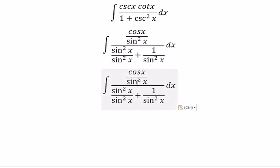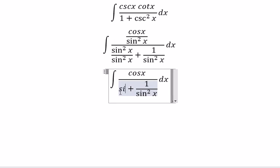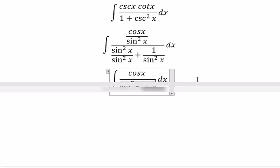Next we need to simplify. For 1 over sine squared x, we get cosine x over sine squared x divided by sine squared x plus 1.